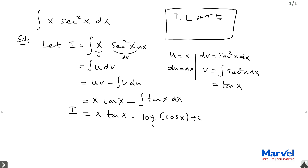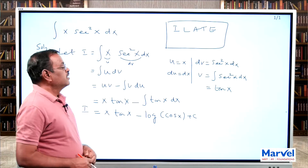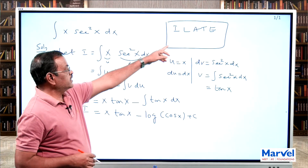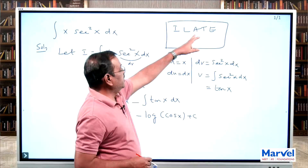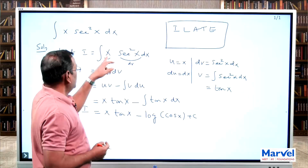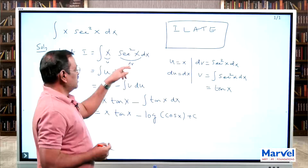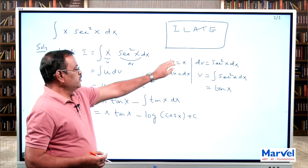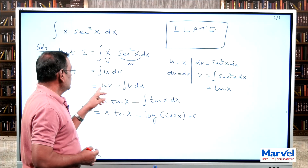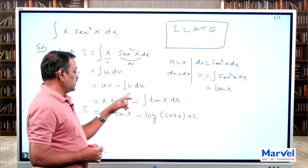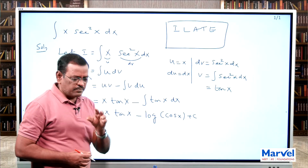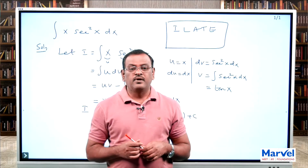We can apply integration by parts if the integrand has a product of two functions. How to select the function as u and the remaining function as dv is based on the ILATE rule: I for inverse trigonometric, L for logarithmic, A for algebraic, T for trigonometric, and E for exponential function. In this given integrand, the algebraic function is u and trigonometric secant square x dx is dv. This is a basic example for integration by parts.